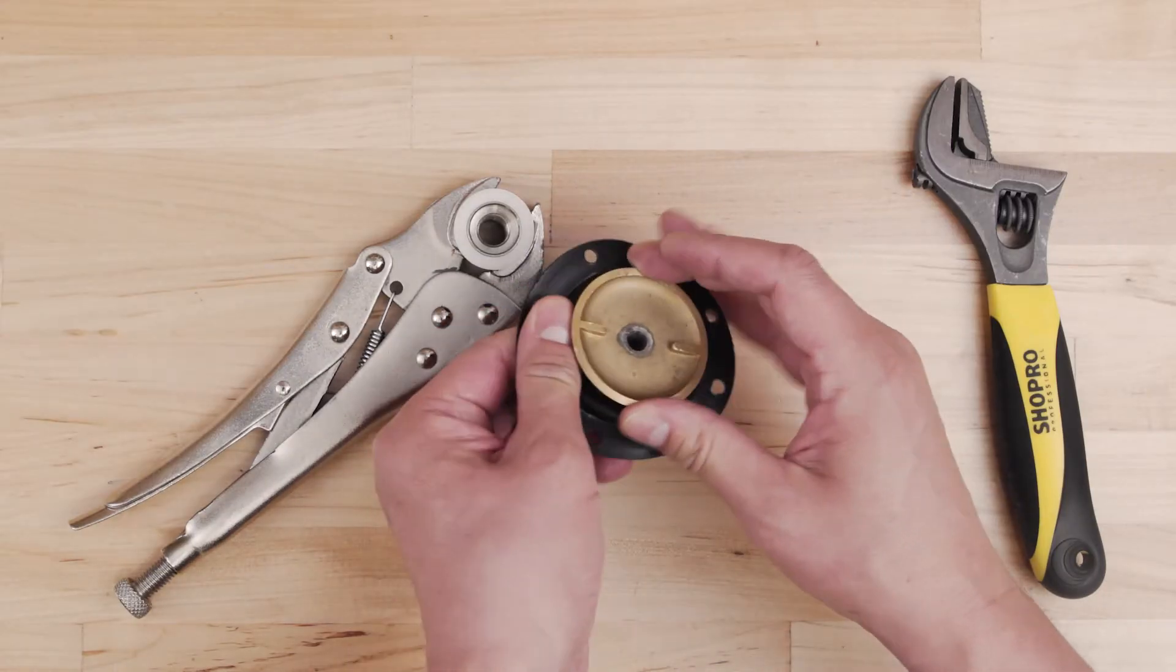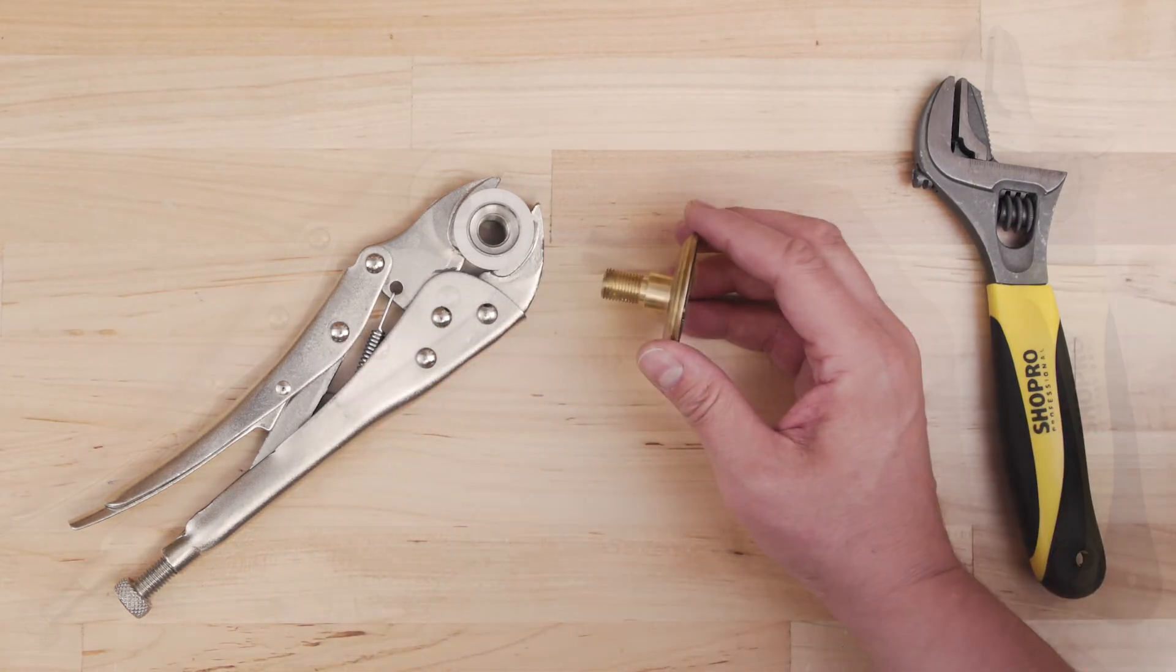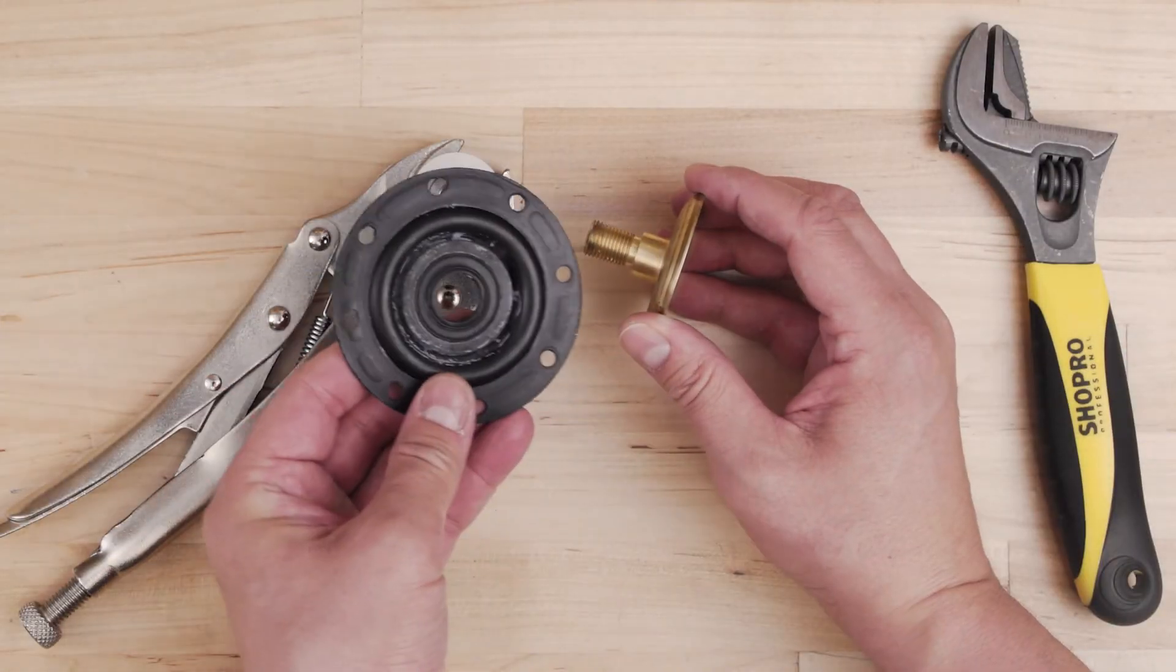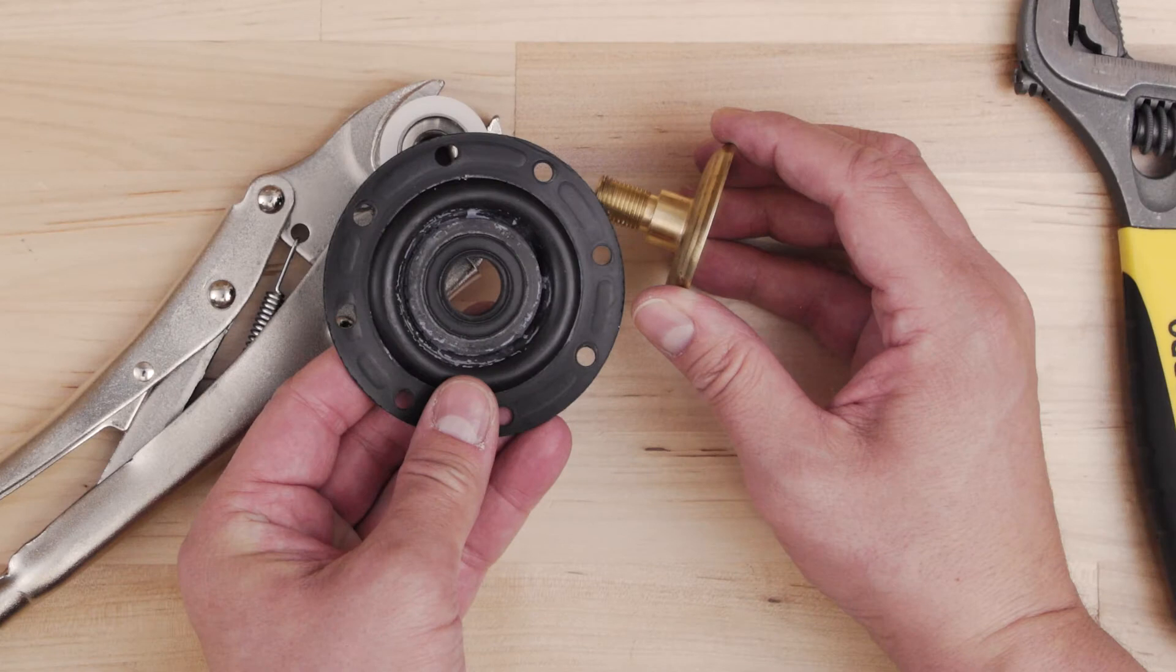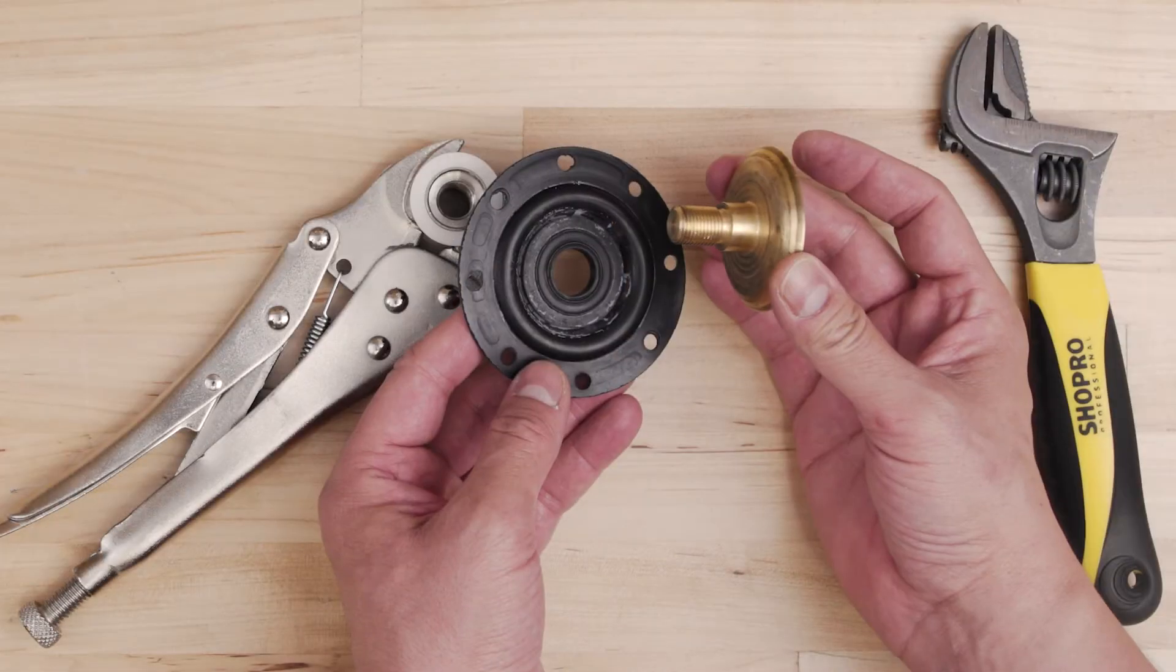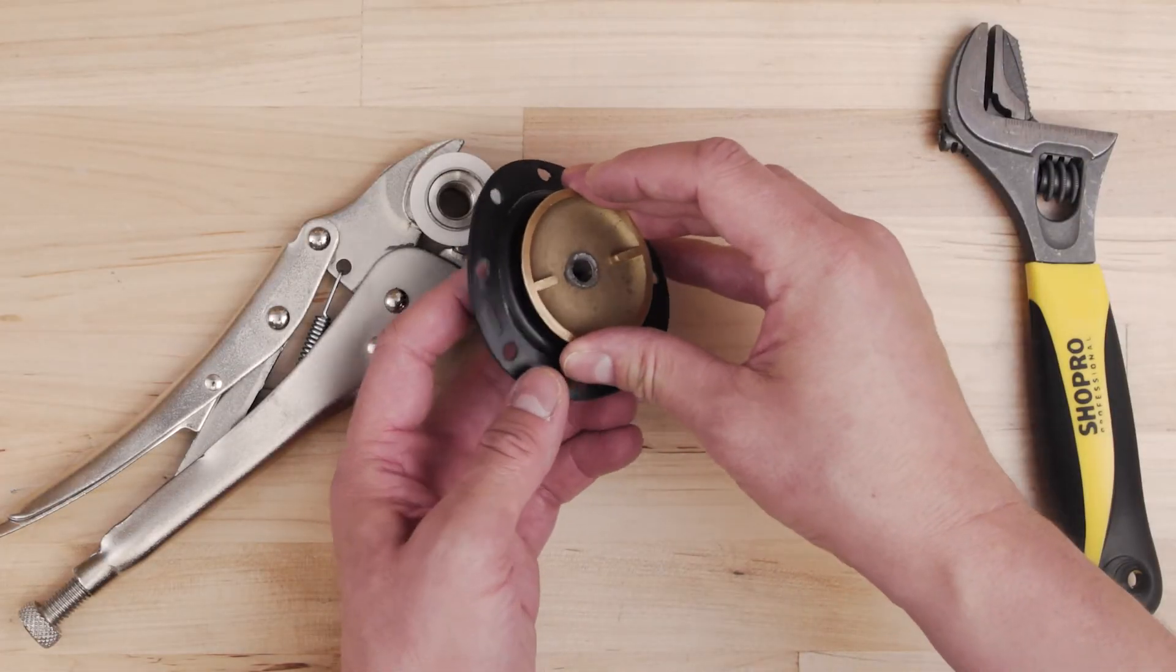Separate and discard the old diaphragm. Align the new diaphragm so that the top is facing you. The top will say 'this side up.' Now, drop the top piece through the hole.